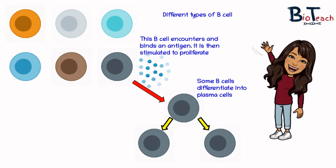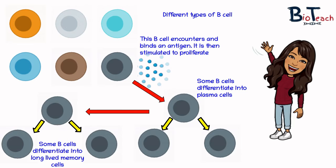Some of the B-cells will differentiate into cells known as plasma cells. Some will differentiate into what we call memory cells, which are long-lived and retained in the lymph nodes to provide future immunity — also called immunological memory. In the event of a second infection by the same antigen, memory B-cells will react more quickly and vigorously than the initial B-cell reaction to the first infection.